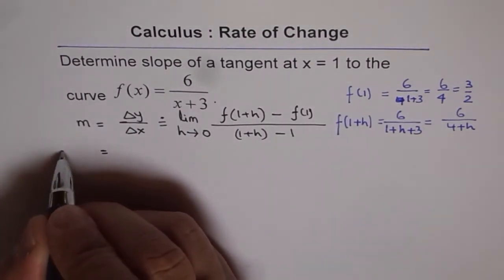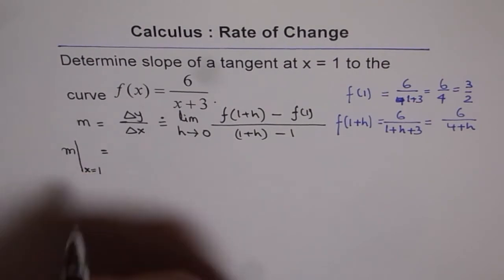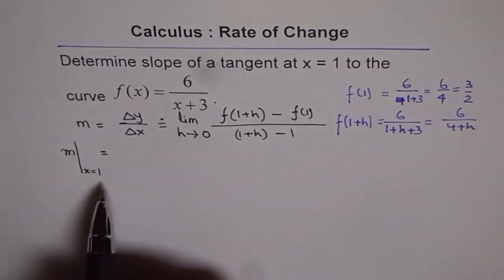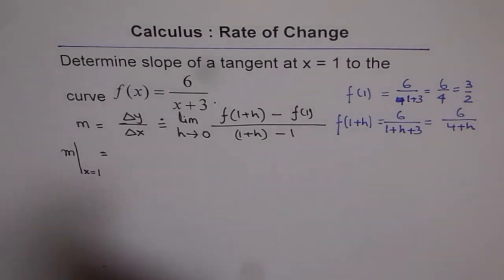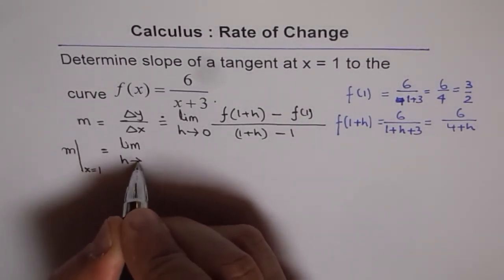So, let me write like this now. Slope m at x = 1. So, that keeps reminding us what are we trying to find, right? And as we say, it is a limiting value. So, I have to write limit h approaches 0.